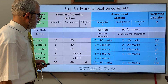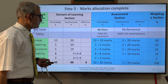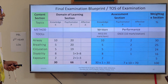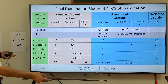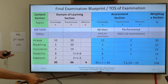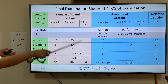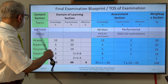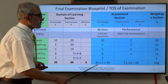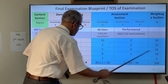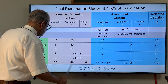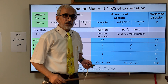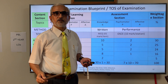For simplicity, marks are not written explicitly in the blueprint. The final shape of the examination blueprint shows: domain of learning, topics, domain of learning, assessment section, and weightage. It clearly tells us which method is being used, which tool is being used, and how many items of that tool are present. If you count across any direction — horizontally or vertically — the total comes to 100. This is the examination blueprint.